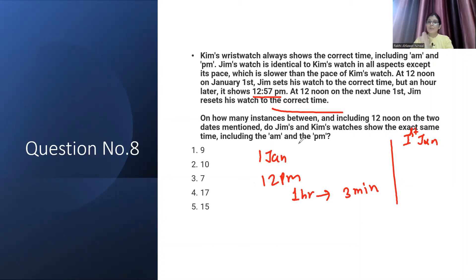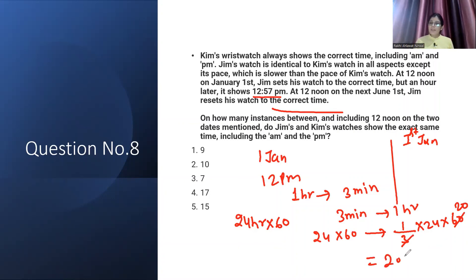On how many instances between and including 12 noon on the two dates do Jim and Kim's watches show the exact time including AM and PM? You have to tell how many instances there will be when it shows the correct time. The AM or PM issue means when it loses 24 hours, 24 hours means 24 times 60. When it loses this much time, it will show correct time again. After 24 hours when it loses, it will show correct time. You have to see in how much time it loses 24 times 60. So 1 upon 3 times 24 times 60. After this much time, it will show correct time. Every this much time, it will show correct time.